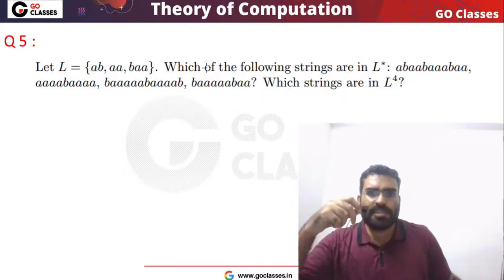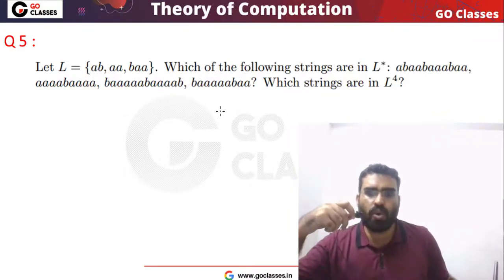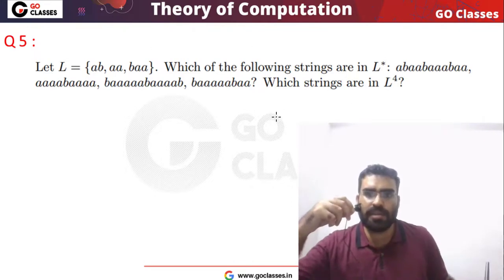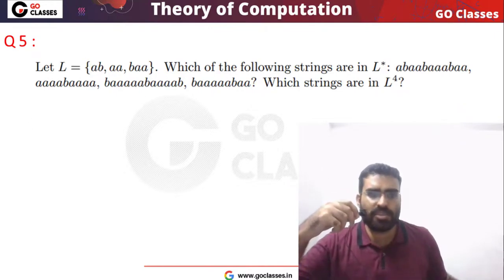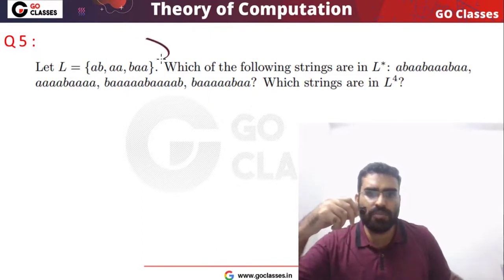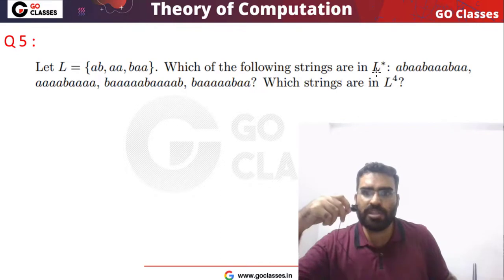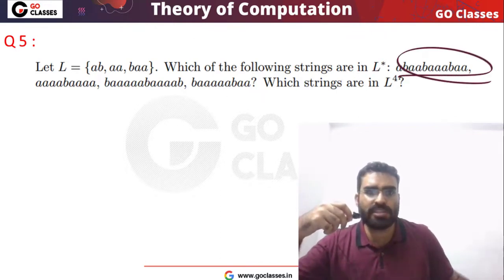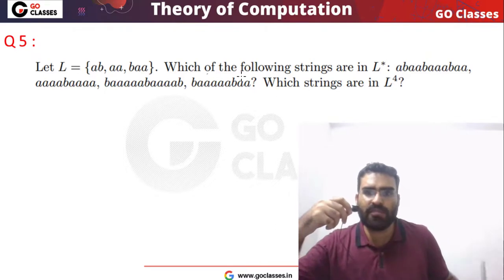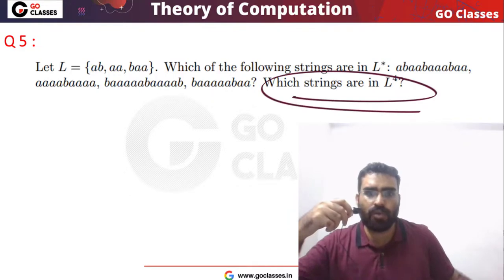Hi everyone. We are discussing Go Classes Theory of Computation Homework 1 Solutions, which are the questions from Peter Lynch Chapter 1. So let's see question number 5. In this question, a language L is given to you, and the question asks which of the following strings are in L star and which are in L power 4.